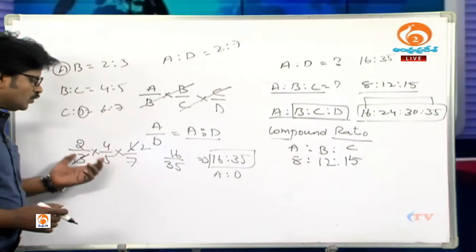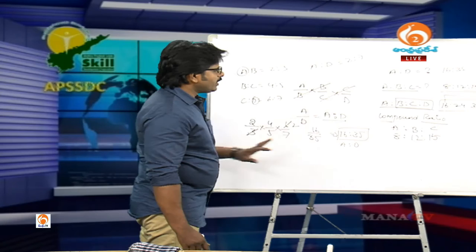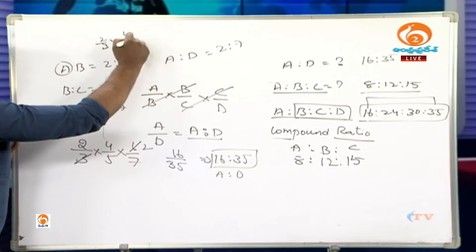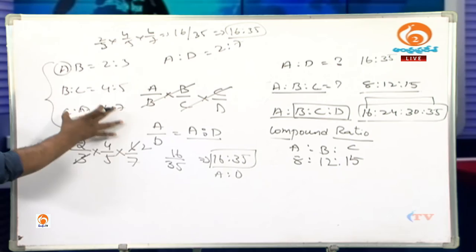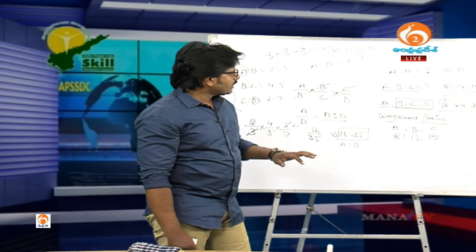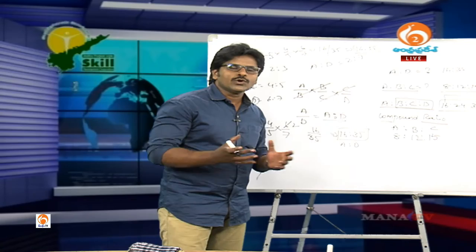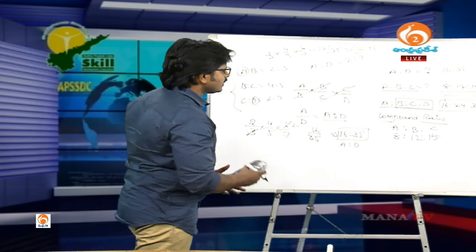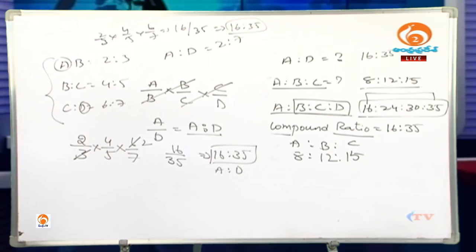The compound ratio of the given ratios 2:3, 4:5, and 6:7 is found by multiplying all the fractions together: 2×4×6 = 48 and 3×5×7 = 105, which simplifies to 16 is to 35. This resultant ratio is called the compound ratio.